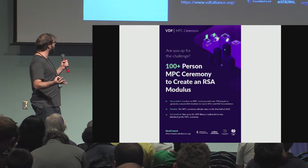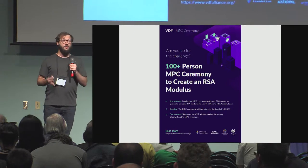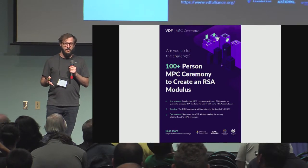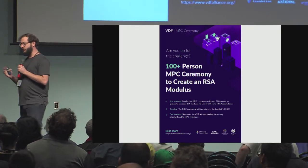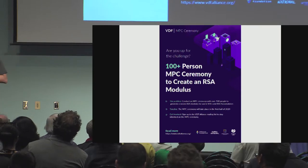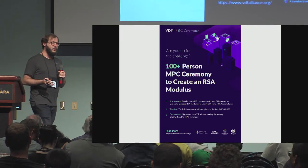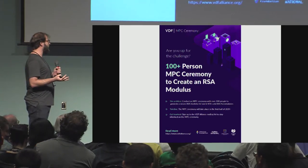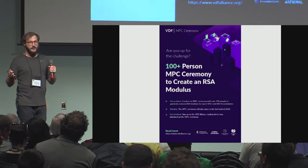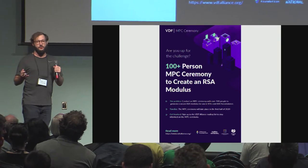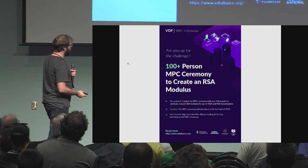We're asking everyone to go to vdfalliance.org and sign up to participate in a hundred — or hopefully a thousand — person MPC ceremony. The goal of this MPC ceremony is to generate an unfactorizable modulus. Fortunately, Mutu, our chair of the conference this year, and also Kermith have been developing an MPC ceremony to accomplish just this. Sometime in the beginning of next year, we're hoping to have a wide-scale distributed MPC ceremony — maybe the largest ever — to generate this public good that anyone can use. Sign up at vdfalliance.org.